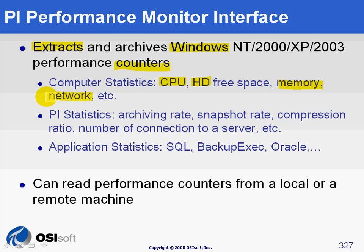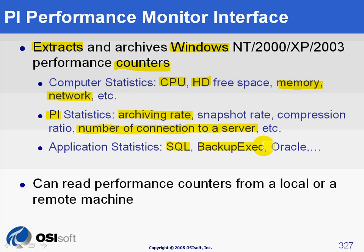In addition to hardware, several applications will provide information about themselves. A good example is the PI Server, which could tell you how many connections are currently open on the server, and how many events are archived per second. Other applications such as SQL Server, Backup Exec, and many others will also provide information about themselves.